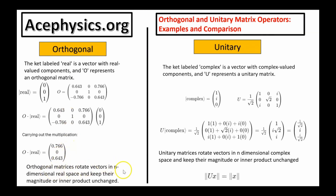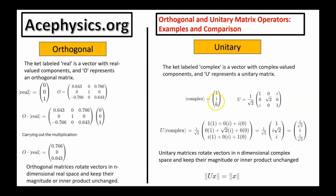Orthogonal matrices rotate vectors in n-dimensional real space and keep the magnitude of their inner product unchanged. Unitary matrices rotate vectors in complex space and keep the magnitude of their inner products unchanged. Here's an example of a unitary matrix and a vector it could operate on. The i's appear in both the unitary matrix and the vector, where i equals the square root of negative one.